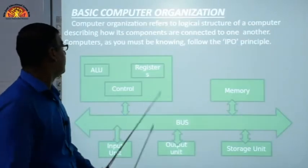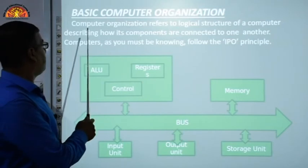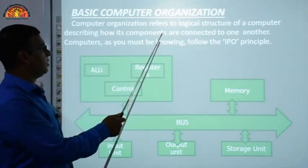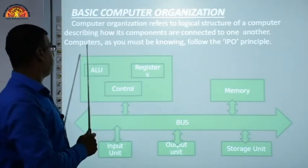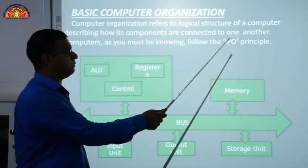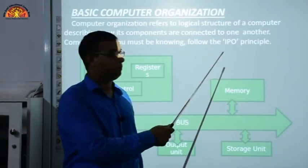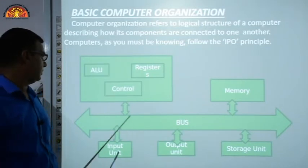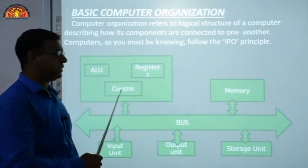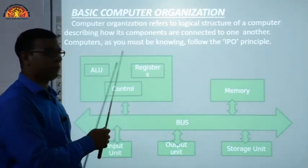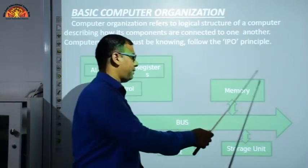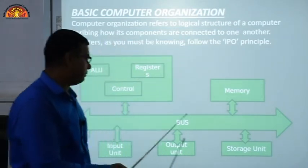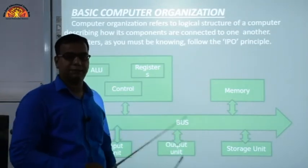Now, basic computer organization. Computer organization refers to the logical structure of a computer, describing how its components are connected to one another. Computers follow the IPO principle — Input, Process, and Output. The CPU consists of ALU, registers, and control unit. Other parts include memory, input unit, output unit, storage unit, and a bus that connects all parts.